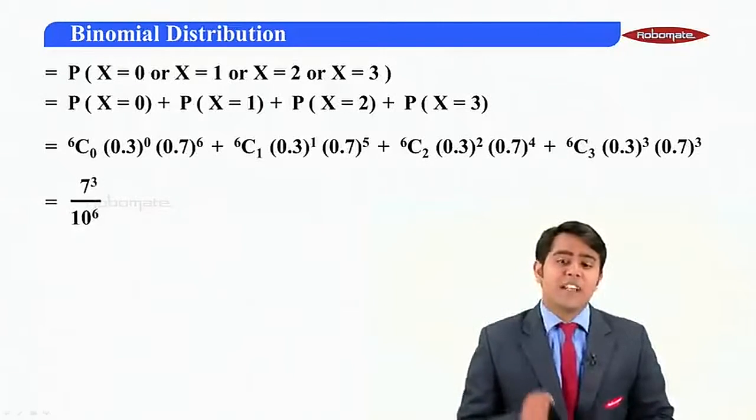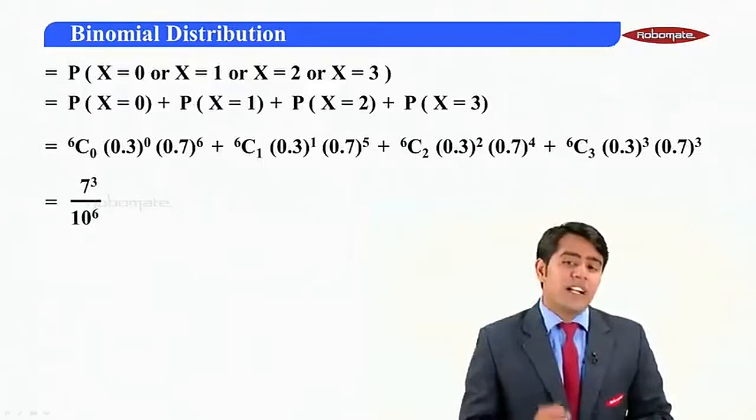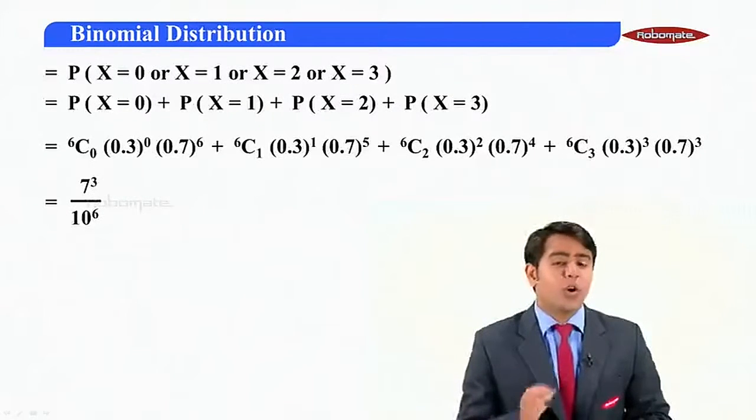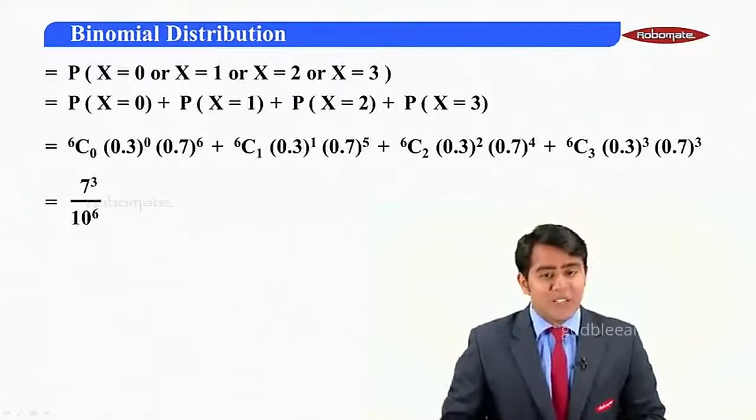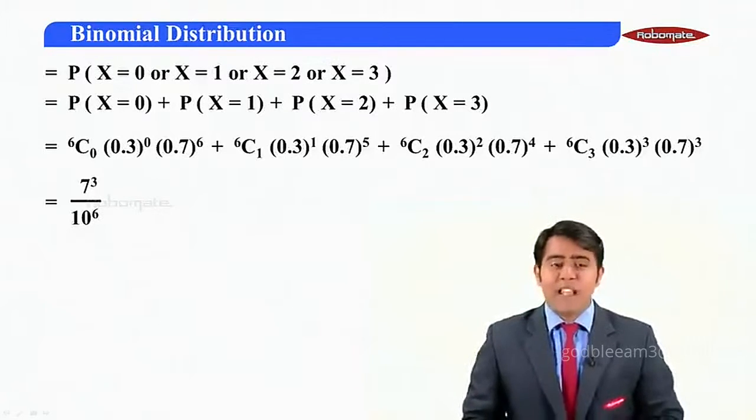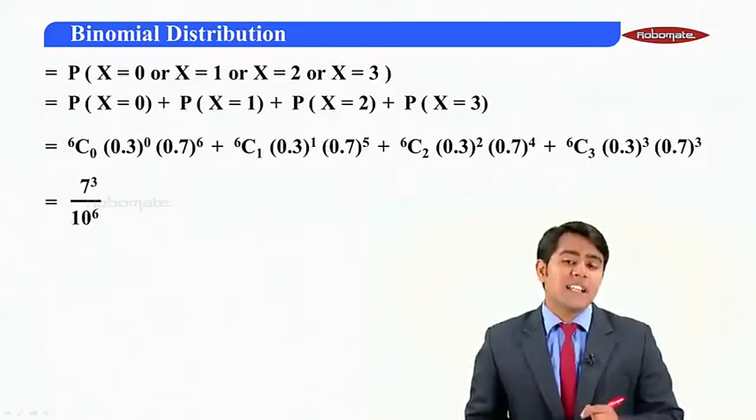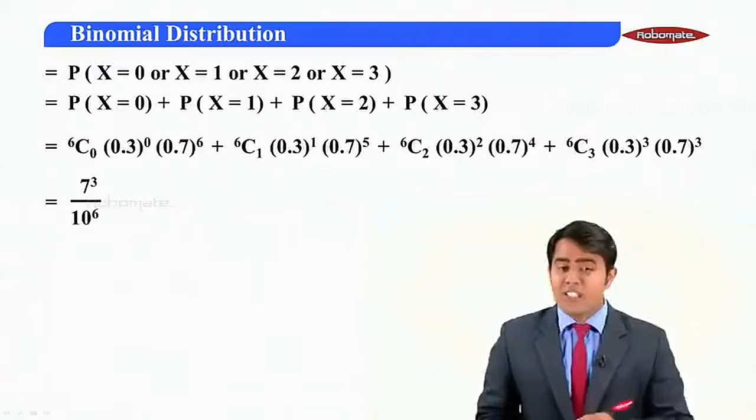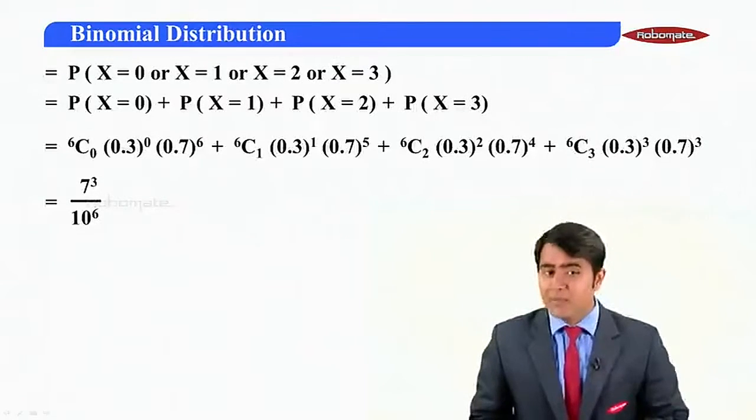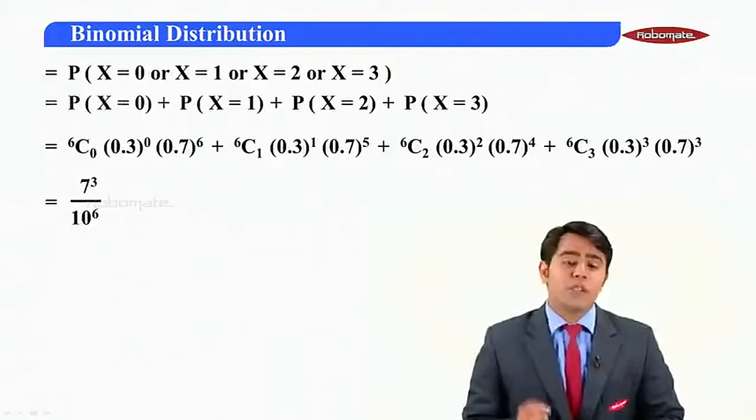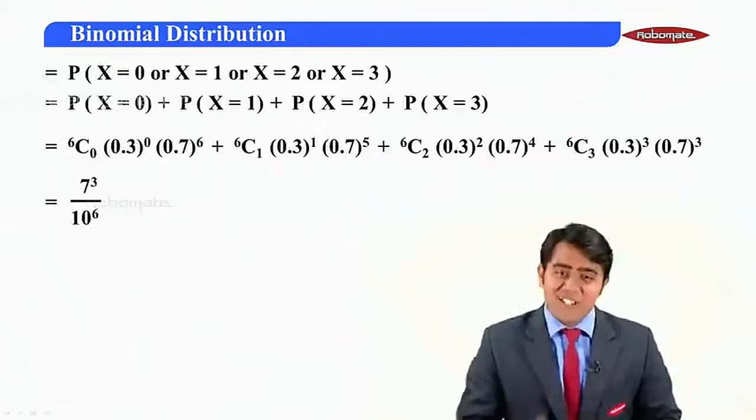Now, when we start solving this value here, we observe that in the denominator, we have 10^6 common from all the given values. So I can take out 10^6 in the denominator. Also, if I observe the numerator, I have 7^6 in the first term, 7^5 in the second term, 7^4 in the third and 7^3 in the fourth term. So I can take out 7^3 common.